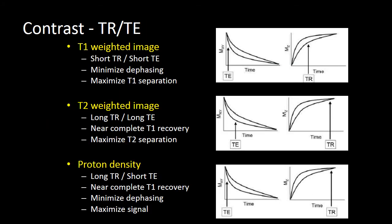Let's review the three basic weightings. A T1-weighted image is going to have a short TR, which maximizes the difference in longitudinal recovery between tissue types. We're also going to have a very short TE to minimize the differences in dephasing. So short TR and short TE minimizes dephasing, maximizes T1 separation, and creates a T1-weighted image.